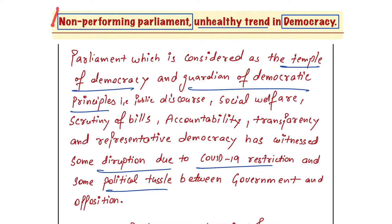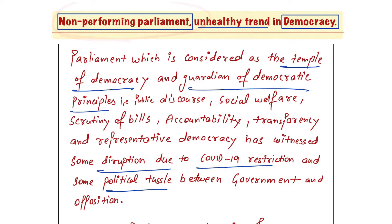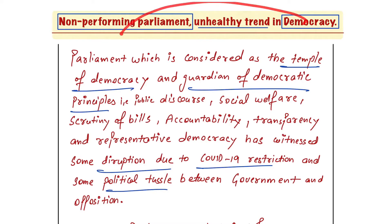The keyword is 'non-performing parliament' — you have to identify the keywords. So what is the work of parliament, but it is not doing it — that is non-performing parliament. After that, there is the word 'trend' — it was not like this before, it is a recent trend. And 'unhealthy trend in democracy' — what are the principles of democracy? You need to connect those to parliament — how does parliament uphold the principles of democracy?